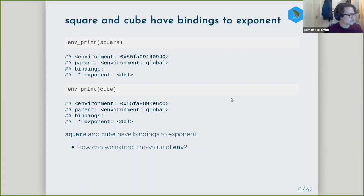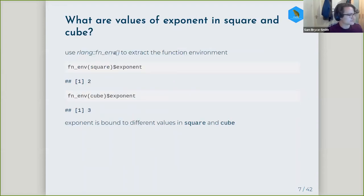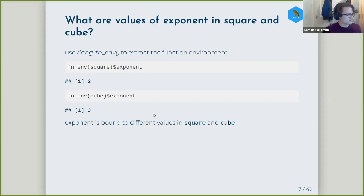What's shown in the chapter is to use the function `fn_env` from rlang. If you extract the function environment and look for the binding, you can see that in both cases exponent is bound to different values for square and cube.